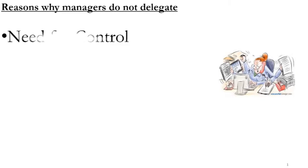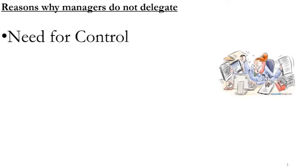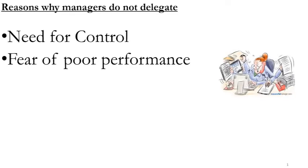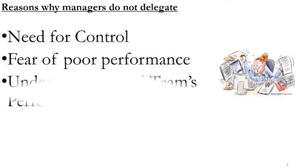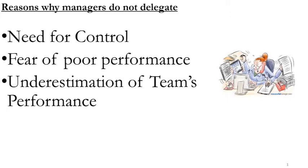Why is there a reluctance by managers and leaders to delegate? The top of the list is the hunger for control. Most managers think that the less their subordinates or team members know, the more powerful and indispensable they are — so they hold on to it. Another reason is that they are perfectionists, always afraid this person will not do it well, will drop the ball, will mess things up. Another reason is that they are underestimating the capacity of their team to do anything.